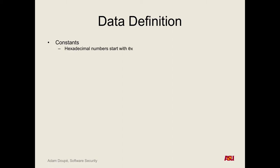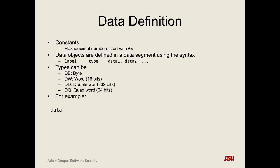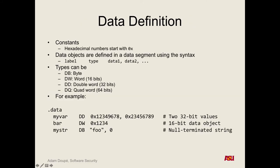Hexadecimal numbers start with 0x. We can define data objects as different types — a byte, a word, a double word, a quad word. In assembly we can define global variables with fixed memory locations and then refer to those in our assembly code. We will be needing to write our own assembly instructions for this class as well as read assembly.